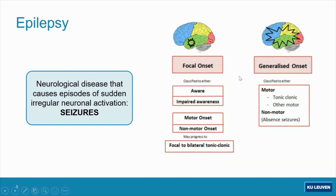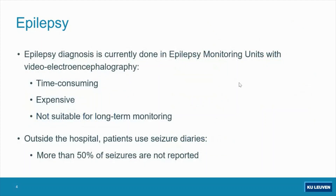Furthermore, we classify seizures based on the symptoms of the patient. We can have seizures with a motor onset, where the patient starts reacting and moving their hands, etc. But we also have what are called absence seizures, where the patients do not have any visual symptoms — they just freeze and do not react for a couple of seconds. This can be mistakenly not categorized as a seizure by someone observing the patient.